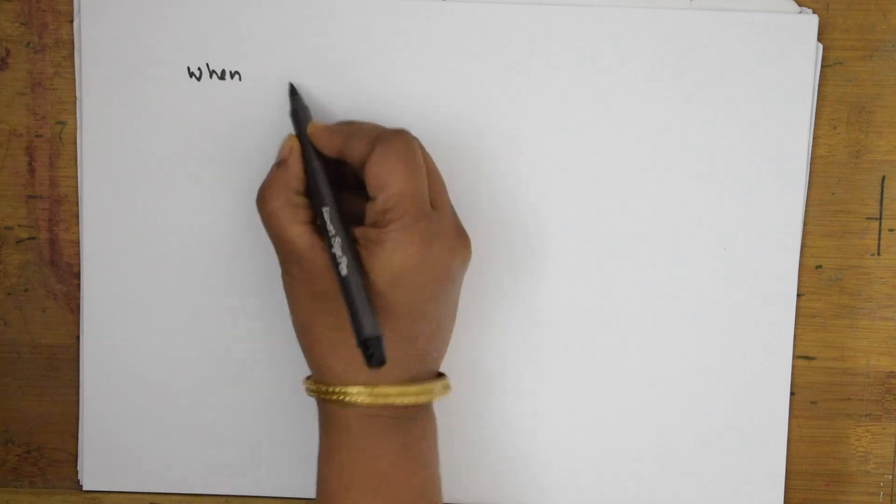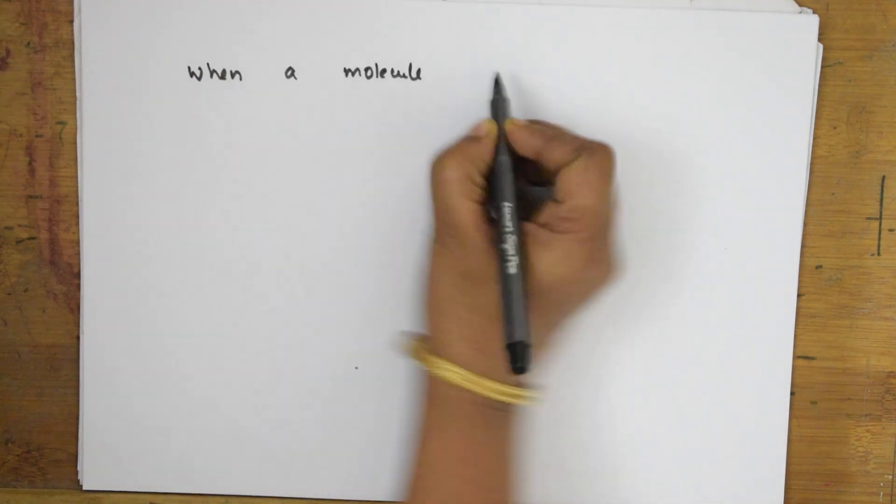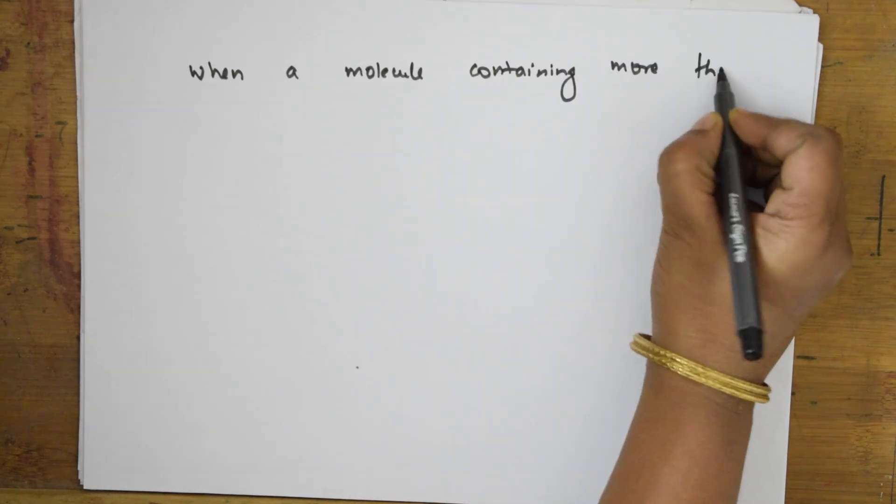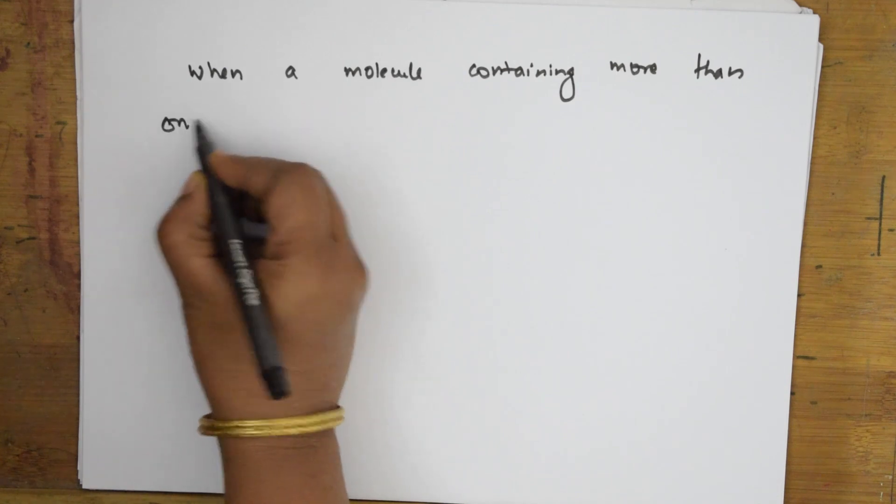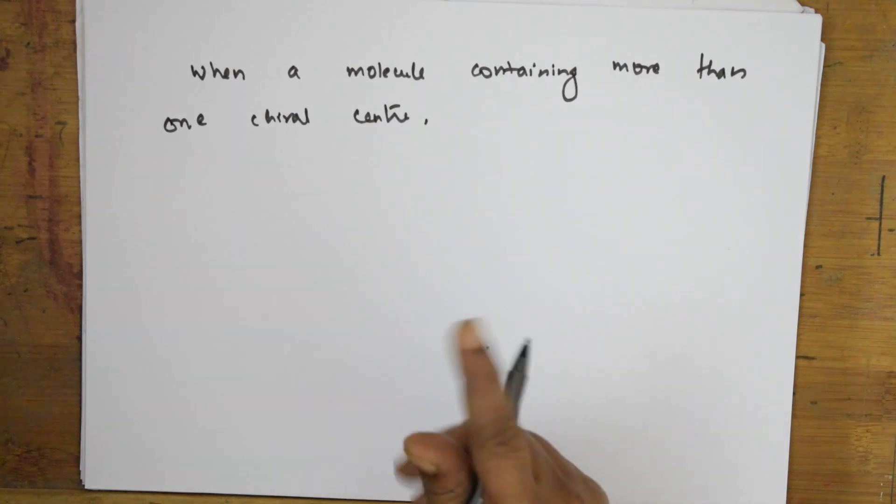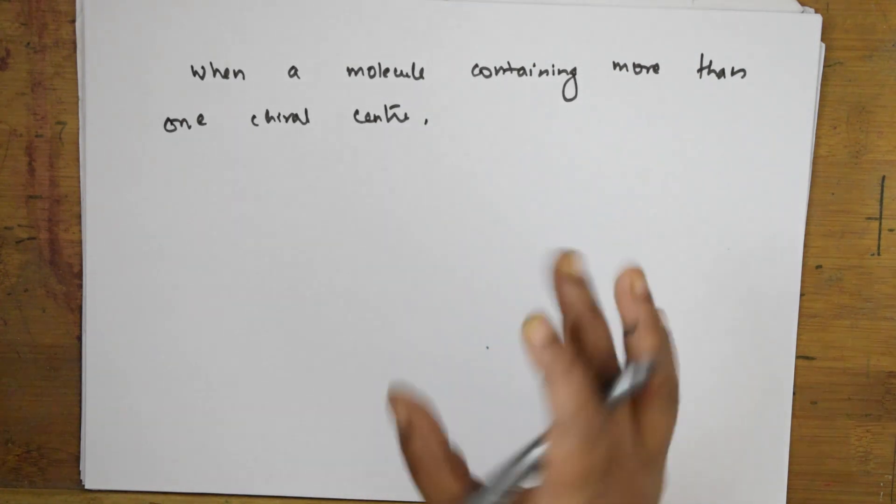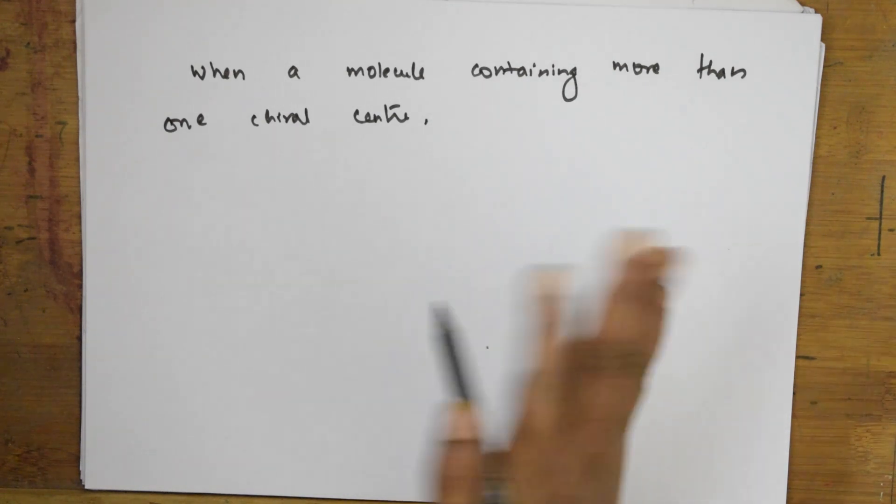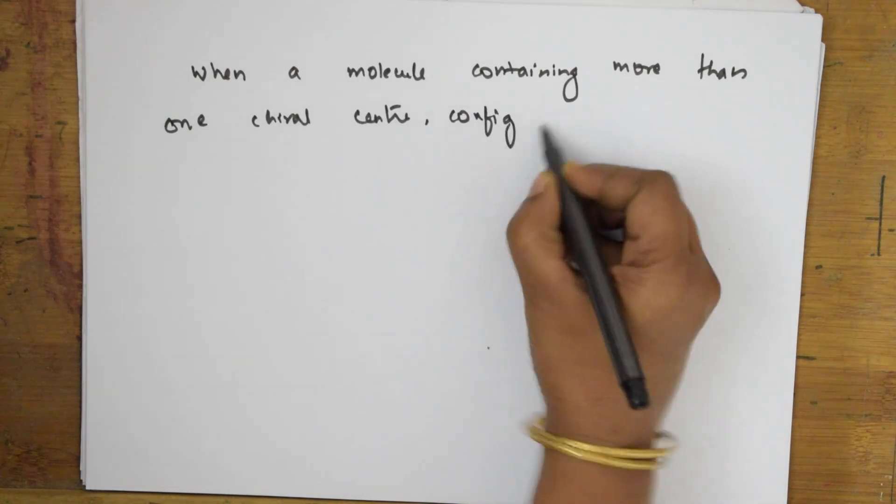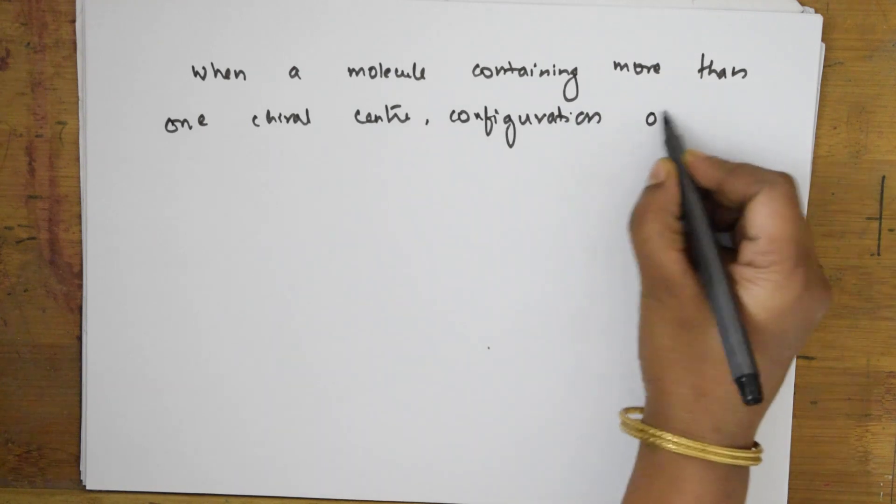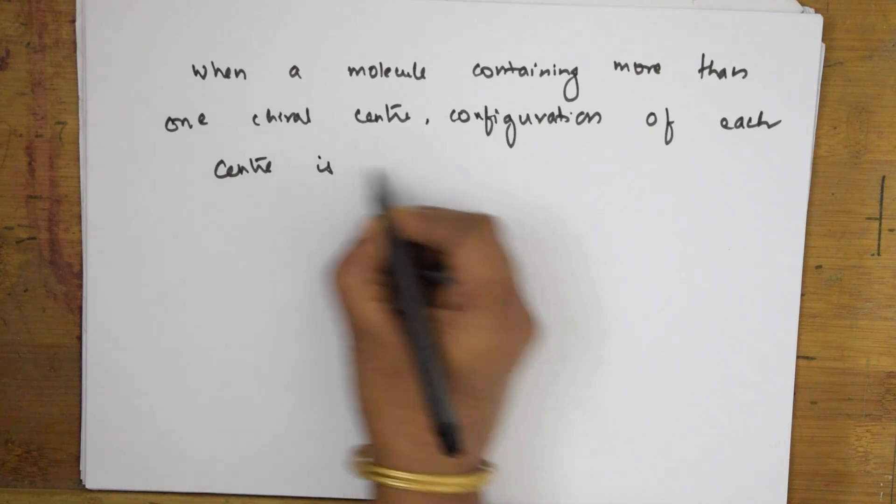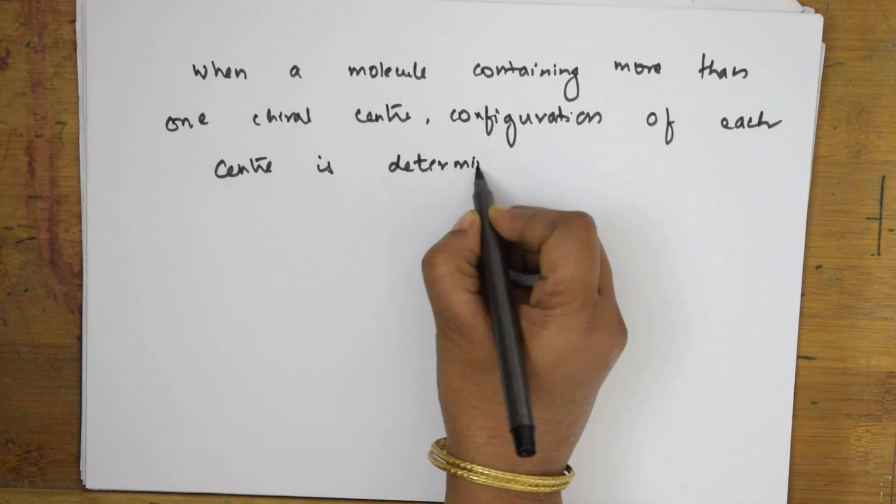When a molecule contains more than one chiral center, we take the configuration of each center. The configuration of each center is determined separately. Let us take an example and see.